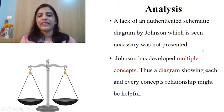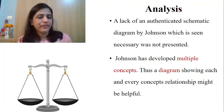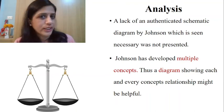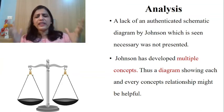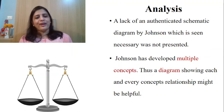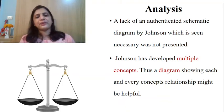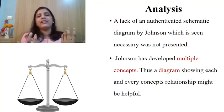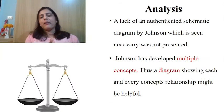Another critique: Johnson has developed multiple concepts but provided only one authenticated schematic diagram. Critics say she should have provided a wider diagram connecting all concepts — showing where tension, equilibrium, stability, and the whole behavioral system relate to each other. Since so many concepts are there, a comprehensive linking diagram would have made the theory clearer. With that, we complete the analysis section.